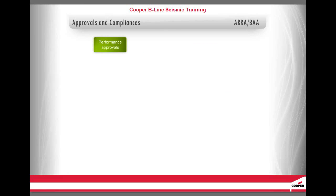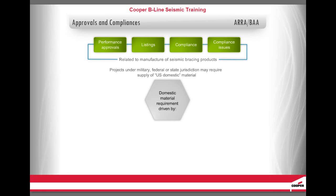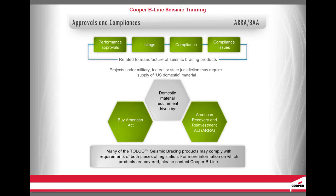In addition to performance approvals, listings, and compliance, there are also compliance issues related to the manufacture of seismic bracing products. For projects that fall under military, federal, or sometimes state jurisdiction, there may be a requirement that materials supplied be U.S. domestic material. Domestic material requirements are driven typically by either the Buy American Act or the American Recovery and Reinvestment Act. Many Tolko seismic bracing products may comply with the requirements of both of these pieces of legislation. For more information on which products are covered, please contact Cooper B-Line.